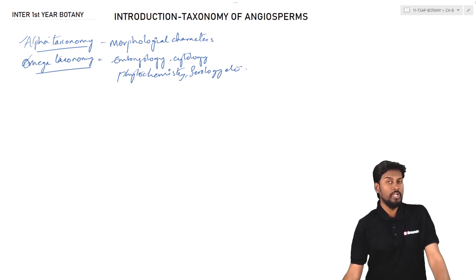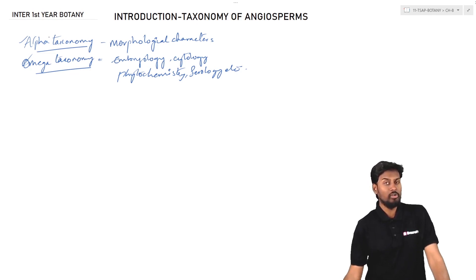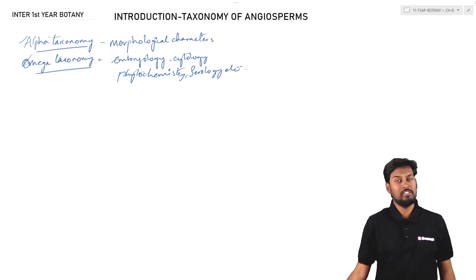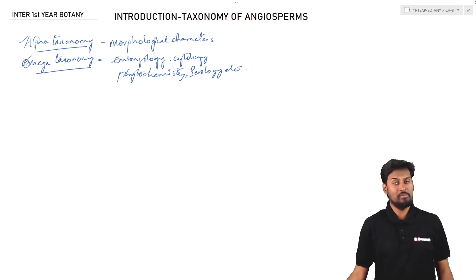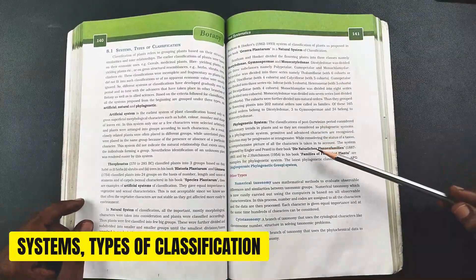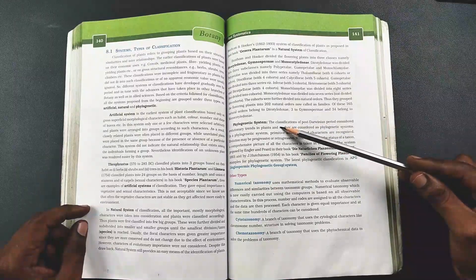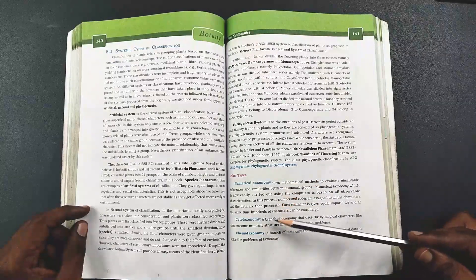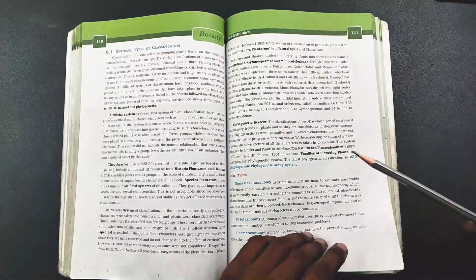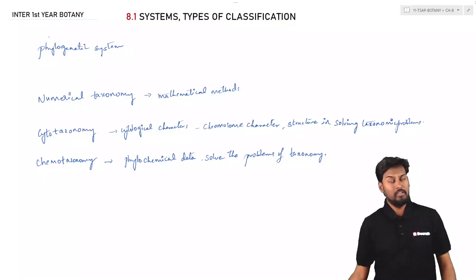These different branches — embryology, serology, cytology, and phytochemistry — are studied so that plants can be placed in a particular order. Alpha taxonomy and omega taxonomy are very important from the examination point of view. The introduction covers different kinds of classification systems: natural, artificial, and phylogenetic systems.